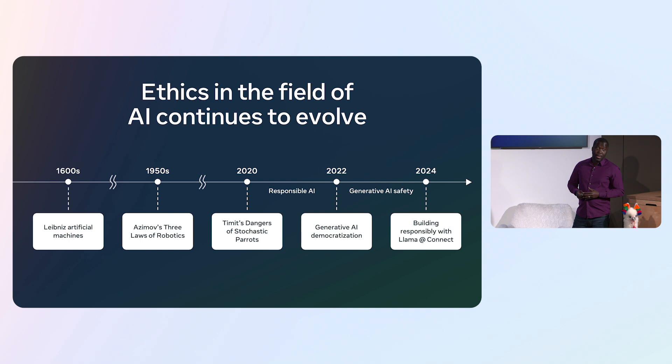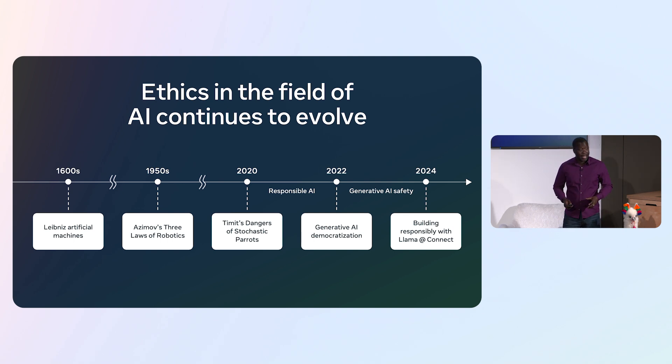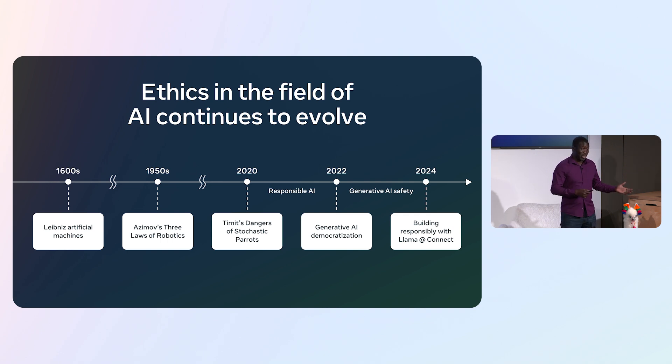Five years ago, that particular line of work was really focused around Responsible AI — that was the name at the time. Responsible AI was looking at the types of harms from AI systems that were very prevalent then. We're talking about recommender systems, classifiers, and the main harms considered revolved around things like bias, inclusion, misinformation, safety, and privacy.